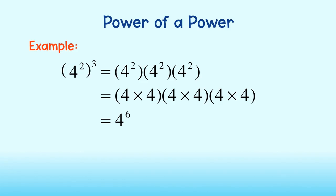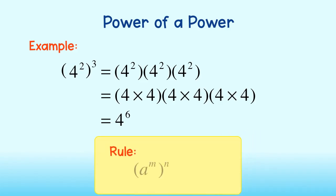Can you figure out our rule? You may have guessed it. Our rule for raising a power to a power is to multiply the exponents. In this instance, 2 times 3 is equal to 6.